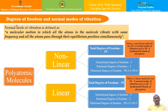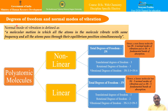Now, degrees of freedom and normal modes of vibration: the number of variables required to locate all atoms in a molecule is called the degree of freedom. For a single atom, three variables are required. For a polyatomic molecule containing n atoms, the total number of degrees of freedom is 3n. These include translational, vibrational, and rotational degrees of freedom. The degrees of freedom play a very important role in determining the normal modes of vibration and the number of fundamental bands of absorption. A normal mode of vibration is defined as a molecular motion in which all atoms vibrate with the same frequency and all atoms pass through their equilibrium position simultaneously.